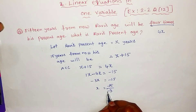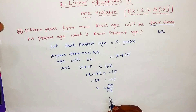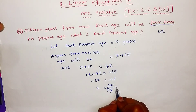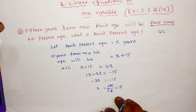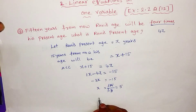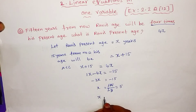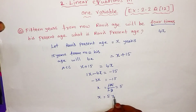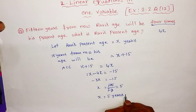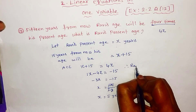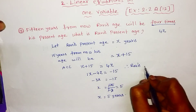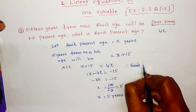So x is equal to minus 15 divided by minus 3. The minus signs cancel, and 15 divided by 3 is 5. So x is equal to 5 years. Therefore Ravi's present age is 5 years.